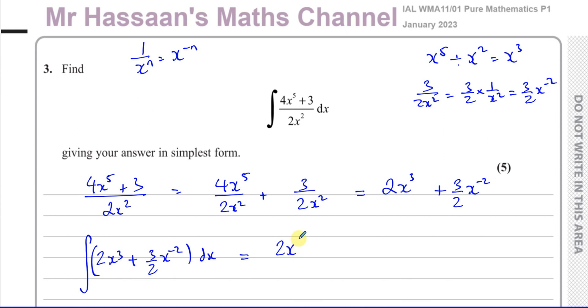So we add 1 to the power, so it becomes 2x to the power of 4 divided by the new power. And same here, we add 1 to the power, so you have 3x to the power of minus 1 divided by the new power which is minus 1. So you multiply the denominator by minus 1.